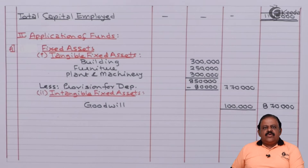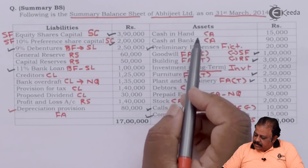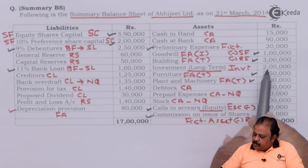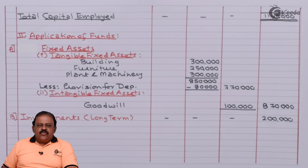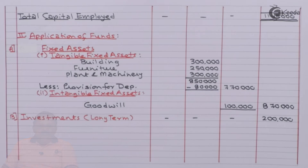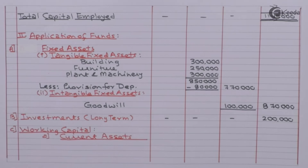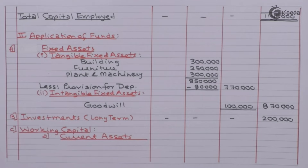Next we have long-term investments of Rs. 2,00,000, shown under the separate heading of investments. Next we will have working capital. In working capital, first we have current assets, which can be of two types: quick and non-quick. Quick assets can be converted into cash fast, whereas non-quick assets cannot be converted into cash easily — for example stock and prepaid expenses. Stock cannot be easily realized in cash, and prepaid expenses paid in advance are also difficult to realize, so both are treated as non-quick.